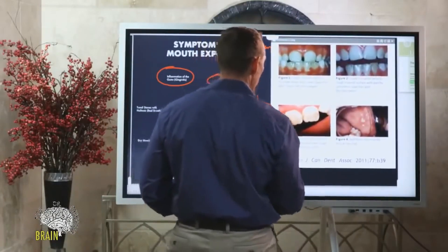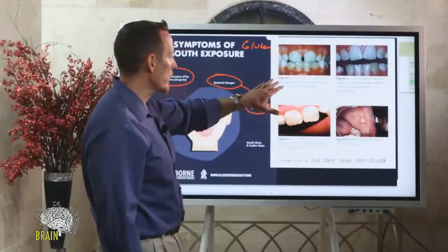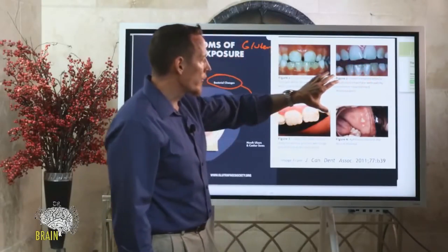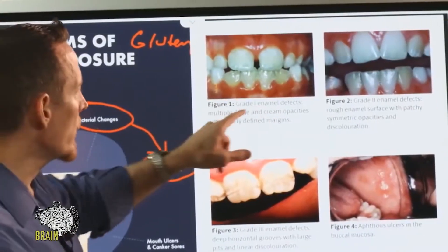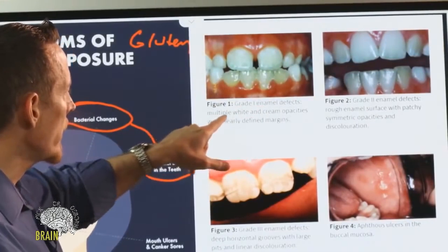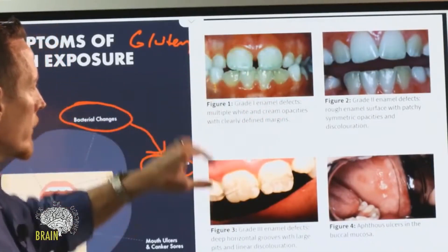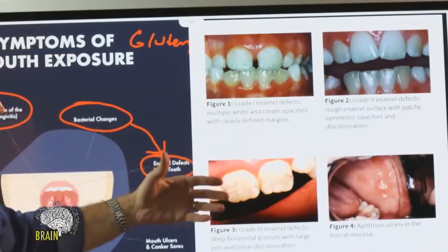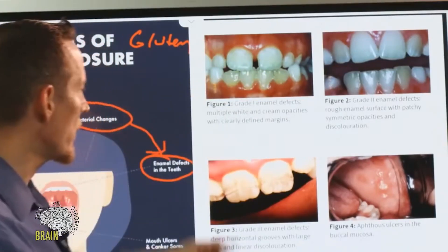This diagram was published in the Journal of the Canadian Dental Association — these are images of what grade one through four enamel defects look like. In grade one, you can see multiple white and cream opacities on the teeth. These are pediatric teeth, but adults can look very similar without the jagged ridges on the base of the teeth.